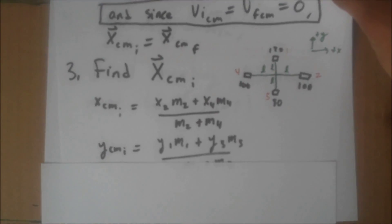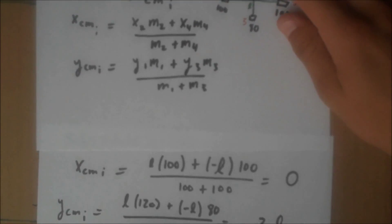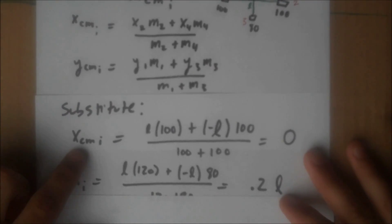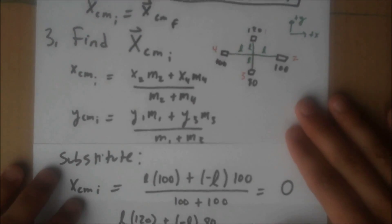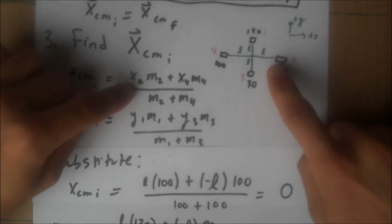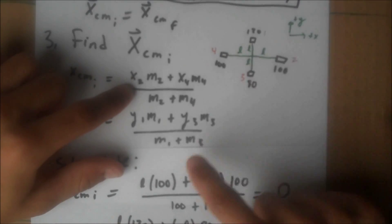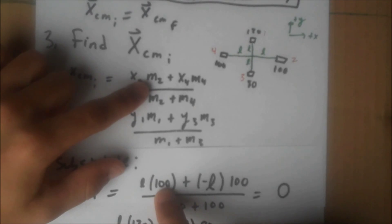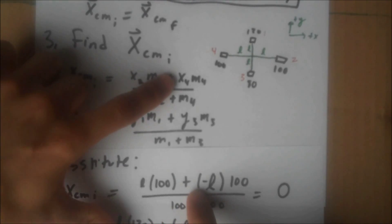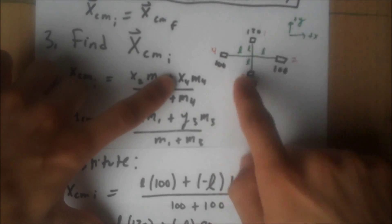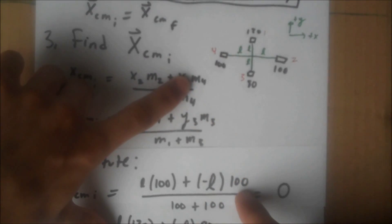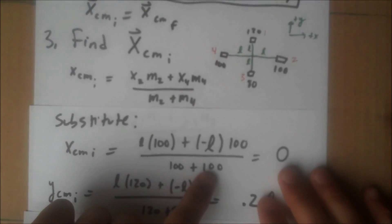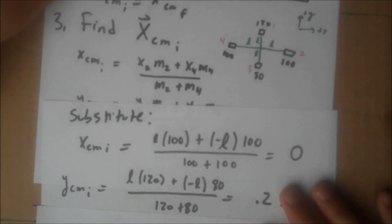Now we have our expressions for the center of mass. Let's substitute in our known values. The x center of mass should be - well, x₂, the x coordinate of 2 is going to be positive L times m₂ is 100. So here we go, L times 100 plus x₄, the position of mass 4 is negative L, m₄ is 100. m₂ is 100, m₄ is 100. Yes, it's getting a little bit hairy.